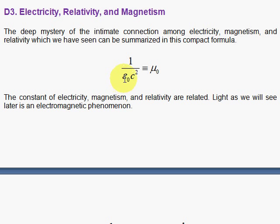So here you have one constant from each of the areas: epsilon sub nought from electricity, mu nought from magnetism, and c from relativity.